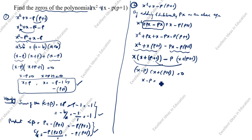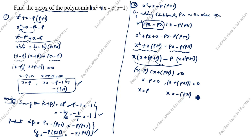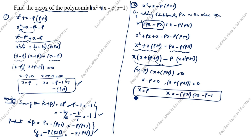So x - p = 0 gives x = p, and x + p + 1 = 0 gives x = -(p + 1) or -p - 1. You see the first and second method answers are the same. You will verify in your exam whether your sum is correct or wrong. Thanks for watching this video.